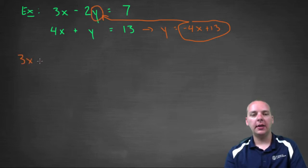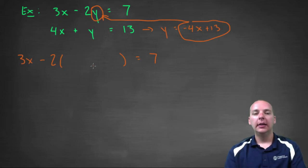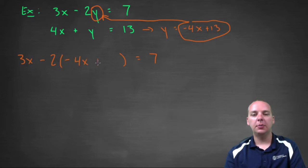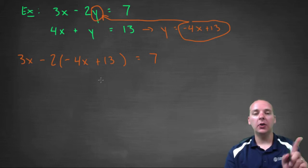You'd have 3x minus—what I usually do is I'll write 2y = 7, but instead of a y I'll just leave a giant blank. And then I'll say okay, well y is the same as -4x + 13. This is a single equation with just one variable, just x, that we should be pretty good at solving.